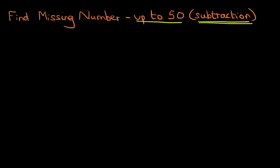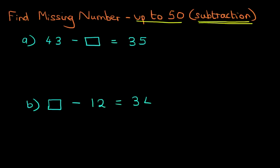So let's have a look at the two questions we're going to be working through. We've got 43 minus something equals 35. That's the first one. And the second one we have is the missing number first, something minus 12 equals 34. So those are our two questions with the missing numbers in different positions.